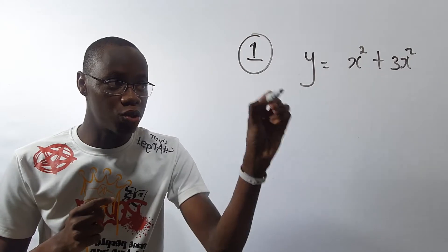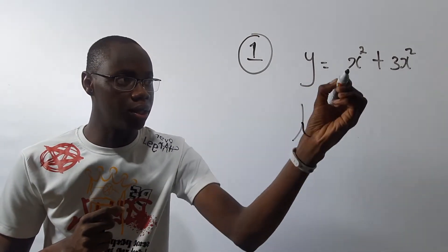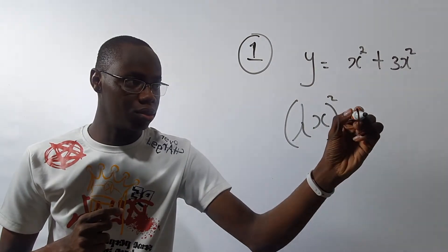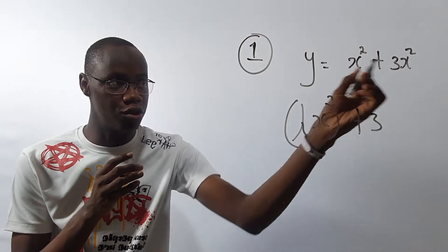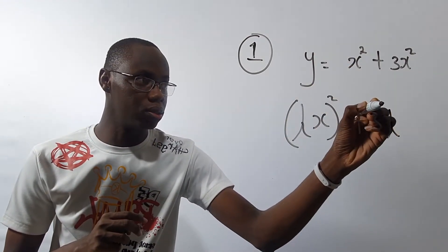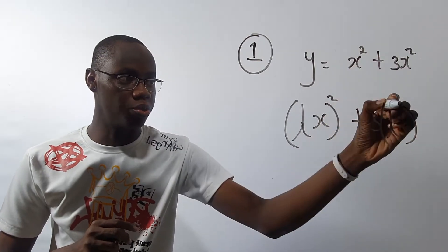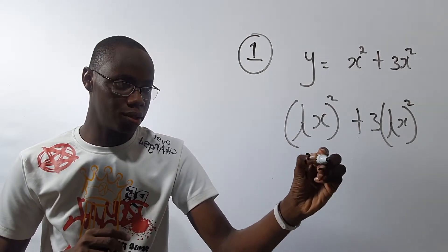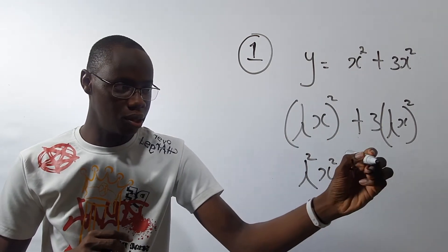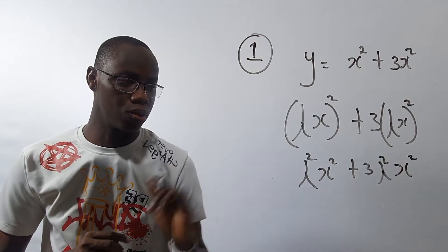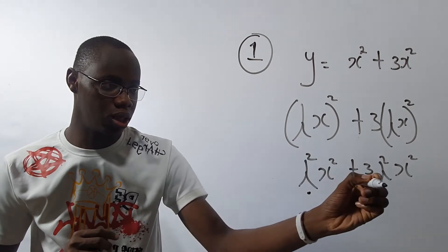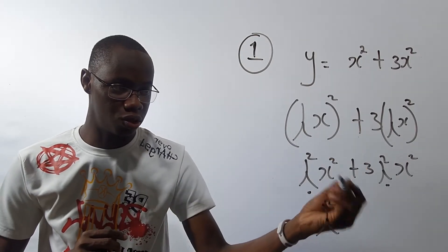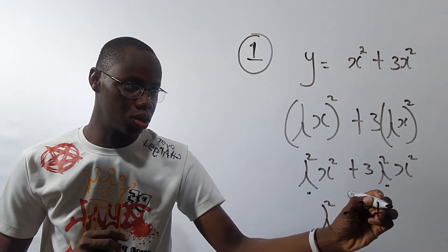So multiply every single variable by lambda. That'll be lambda multiplied by x — so lambda x all squared — indices. Bring out this 3 outside because what we are doing is multiplying the variable, not the constant. So 3, then lambda x all squared — the power of indices gives lambda² x². Now all we need to do is factor out lambda². Lambda² is common, so we have lambda² outside, giving us x² + 3x².